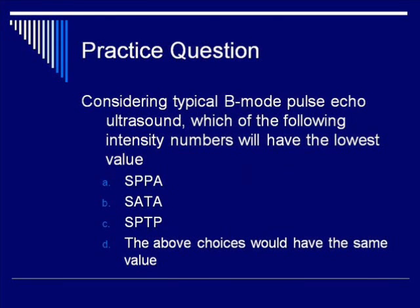Let's pause for a practice question. Considering typical B-mode pulse echo ultrasound, which of the following intensity numbers will have the lowest value? A. SPPA, B. SATA, C. SPTP, or D. The above choices would have the same value. You may pause the video to decide your answer.